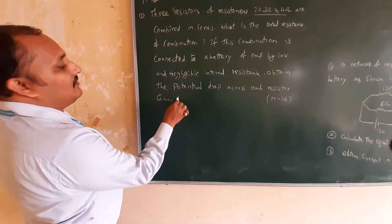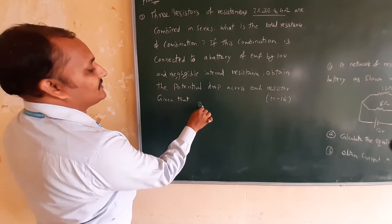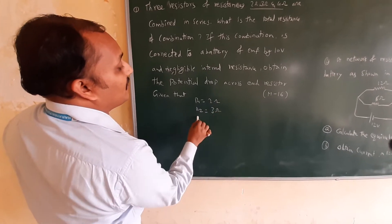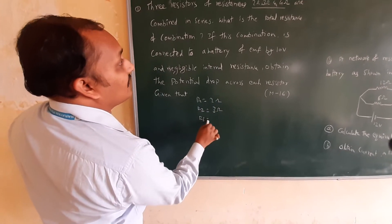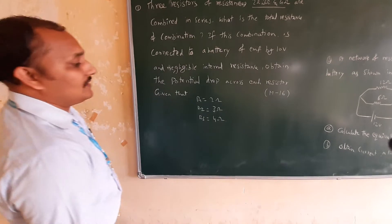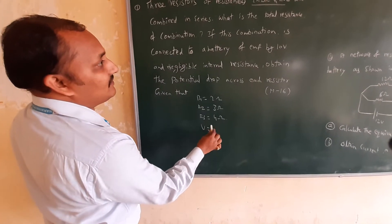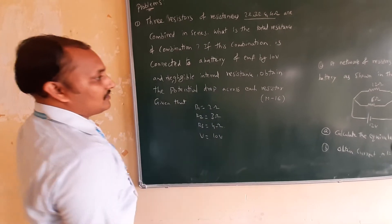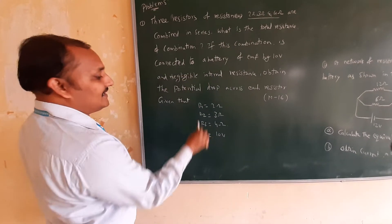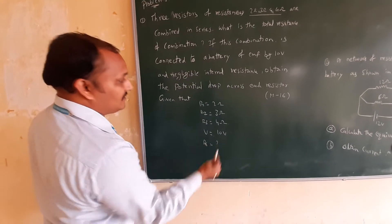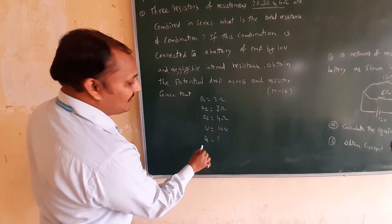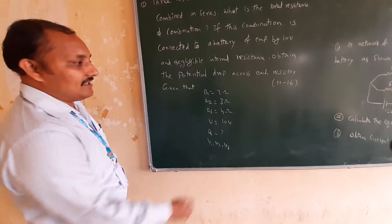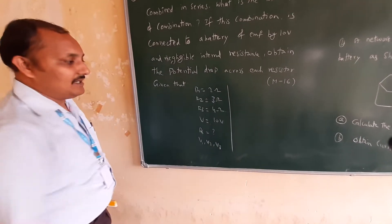Given that three resistors: R1 = 2 ohm, R2 = 3 ohm, R3 = 4 ohm. Voltage = 10 volts. We are asked to find the resultant resistance Rs and the potential drop across each resistance: V1, V2, V3.